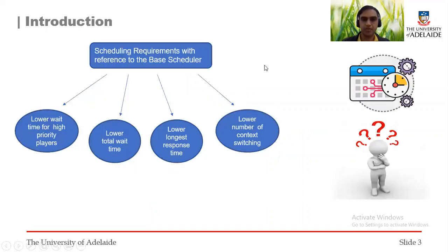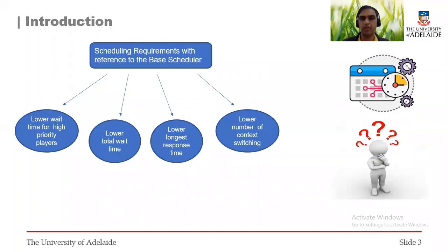In this project, we are expected to develop a scheduler that can meet certain scheduling requirements based on a given base scheduler. These are: lower wait time for high priority players, lower total wait time, lower longest response time, and lower number of context switches. However, meeting all these criteria together is really a challenge.